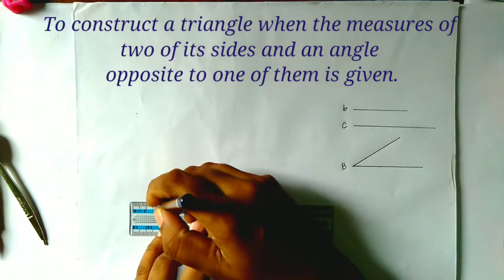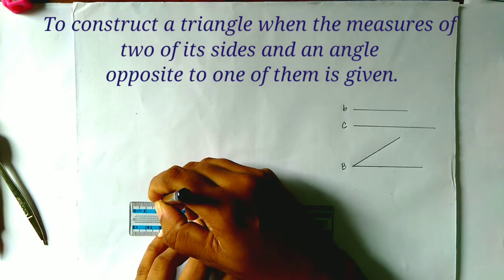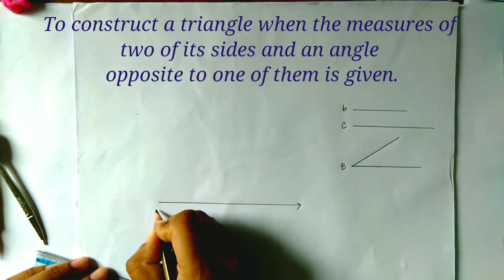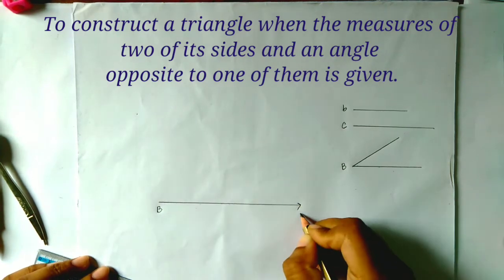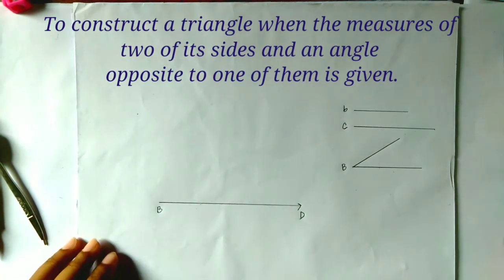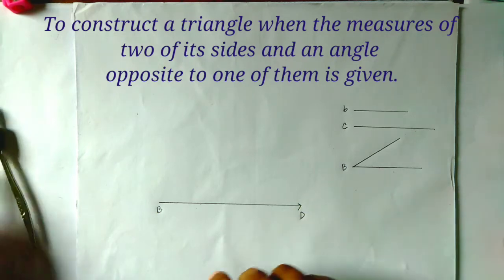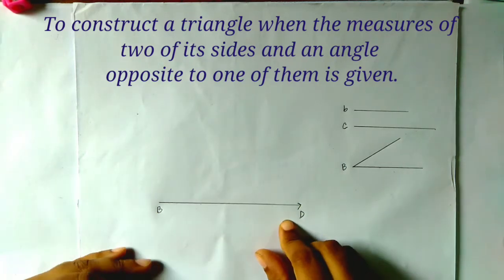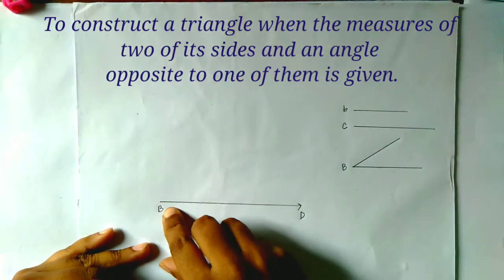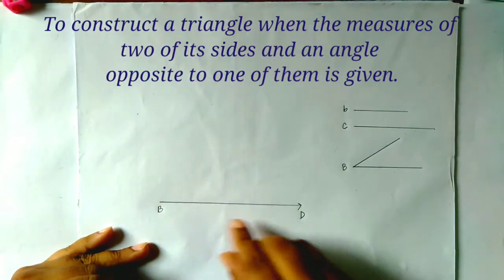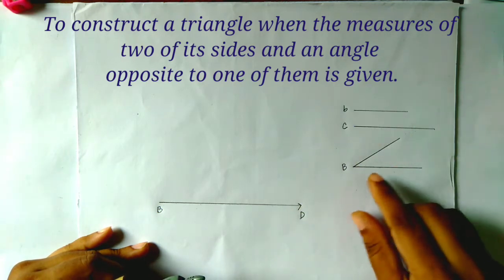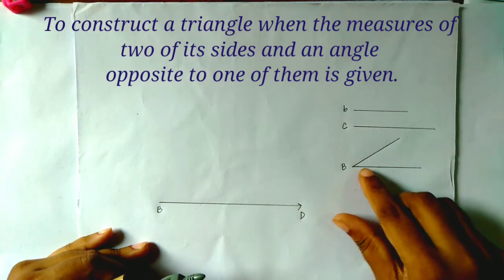First, we draw a ray BD. Now we draw an angle DBE at point B of ray BD, equal to the given angle B.